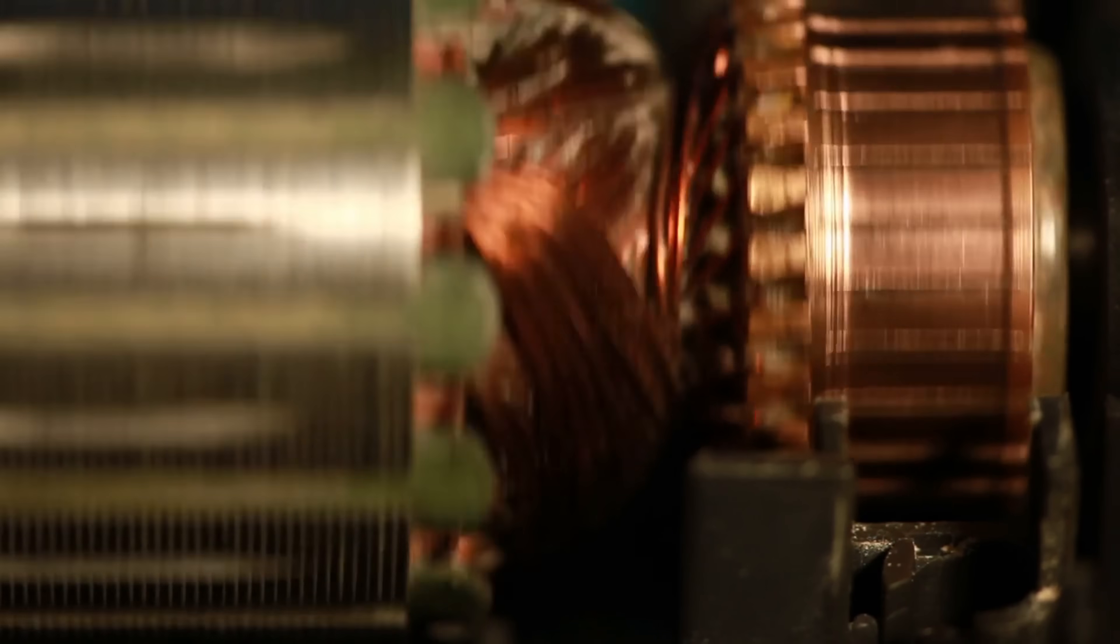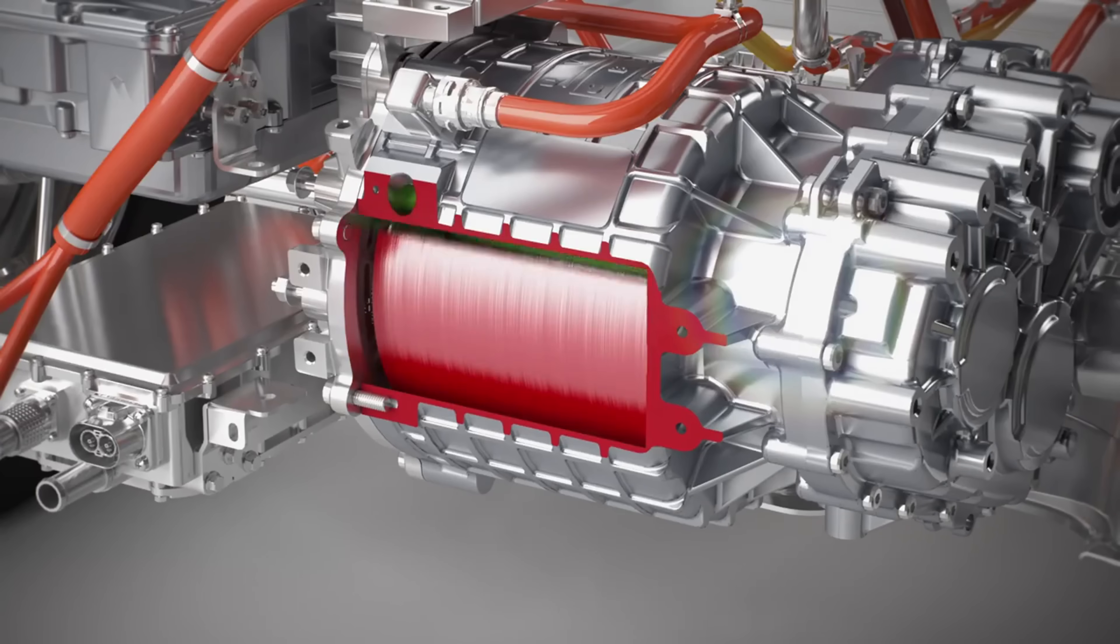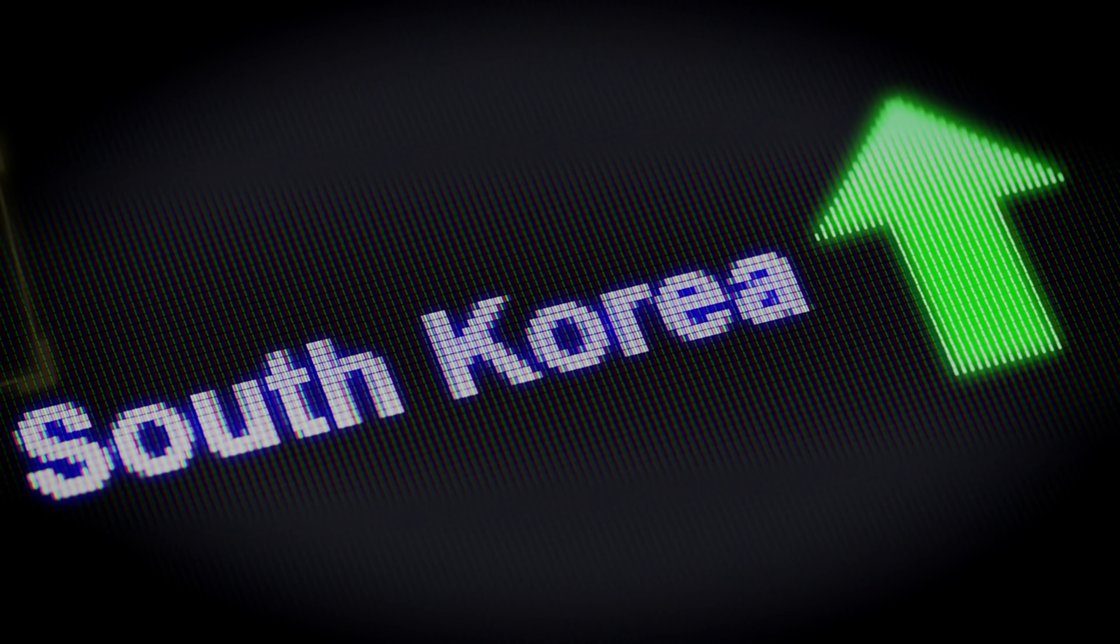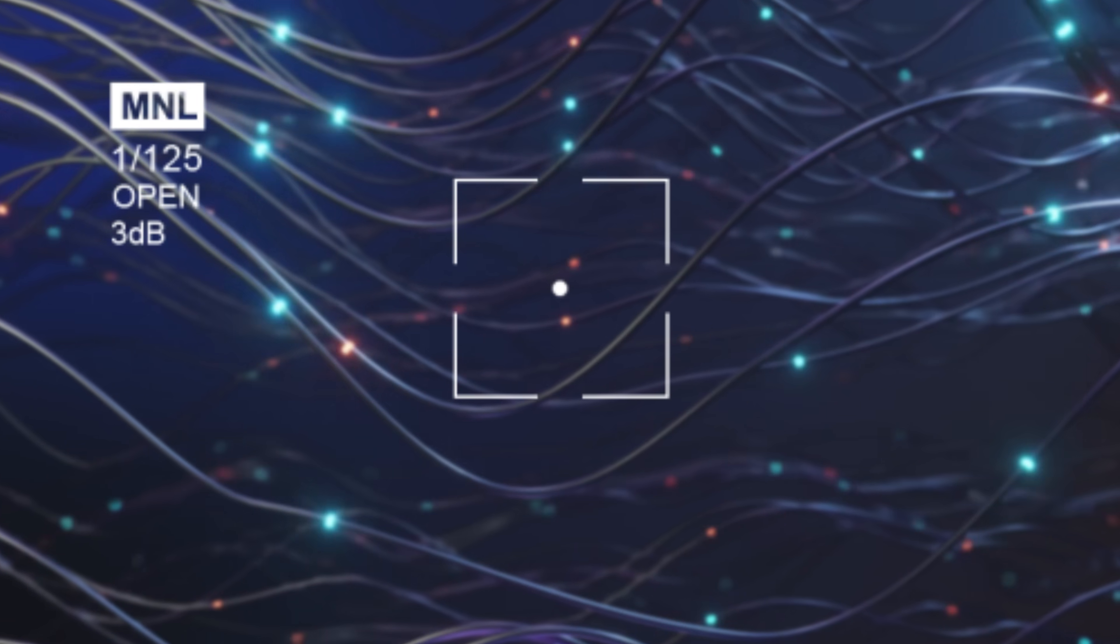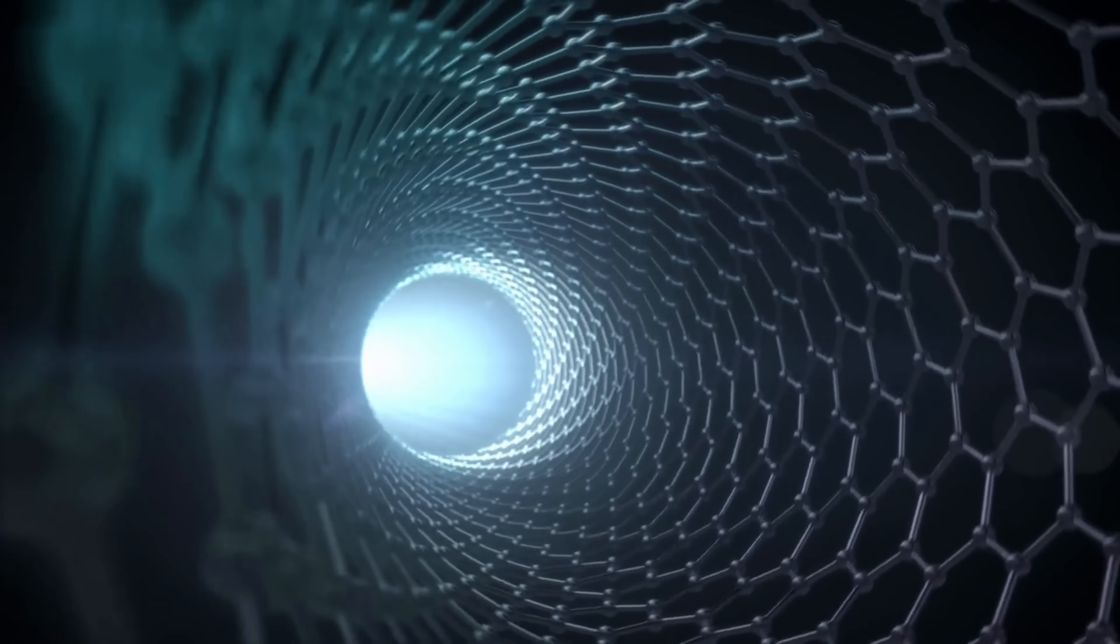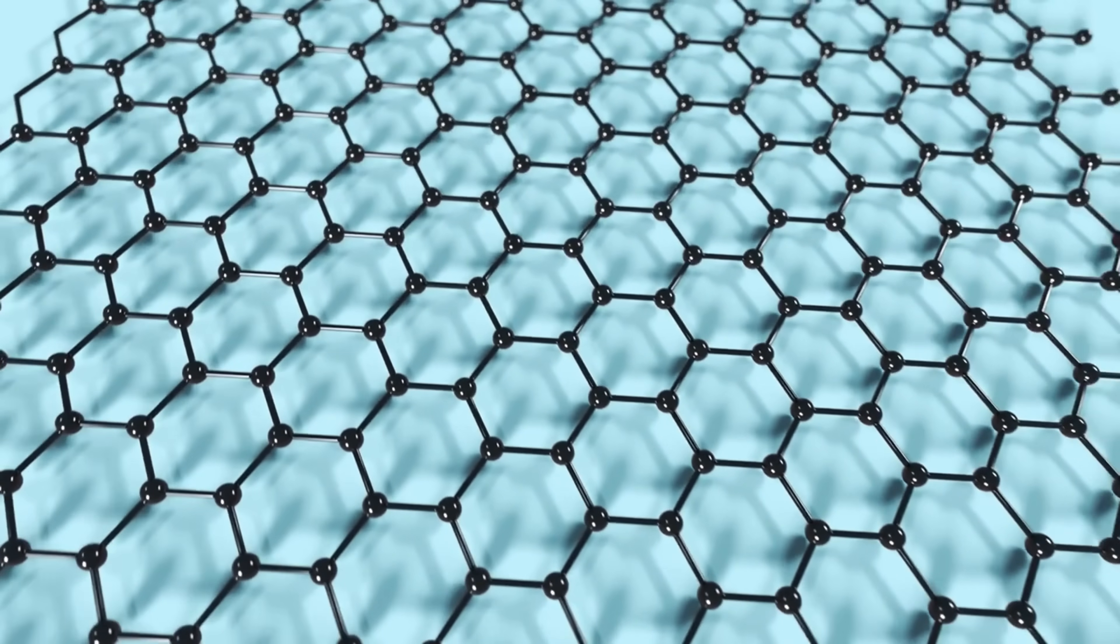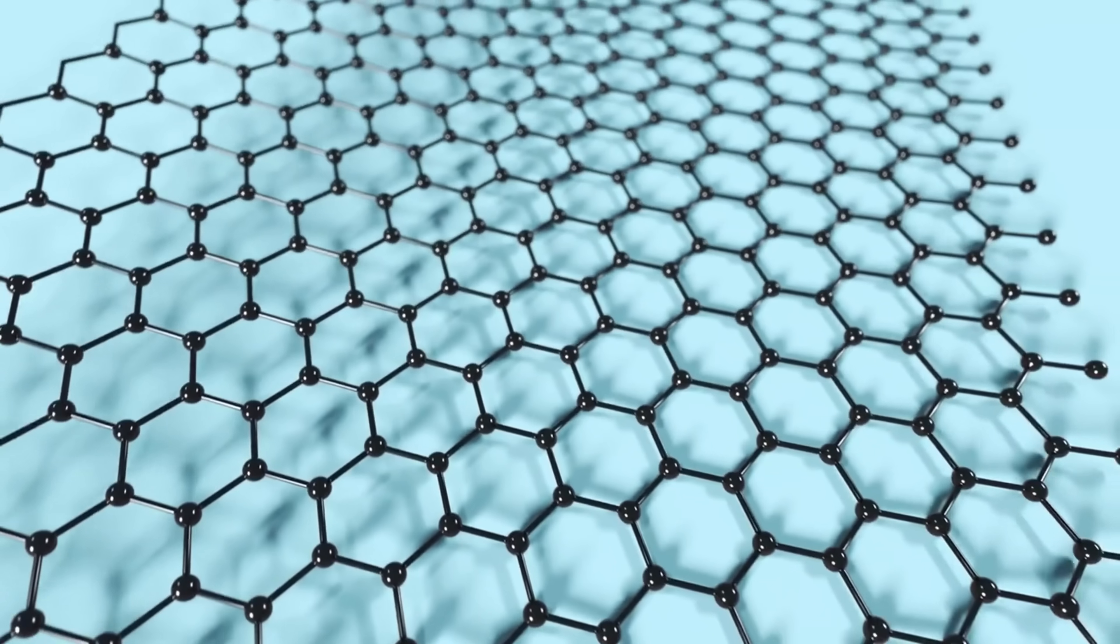For over a century, metal coils have been at the heart of electric motors. But now, a team of researchers in South Korea has built something radically different. They've created a new kind of wiring, made entirely from carbon, that could change how electric motors are built and what they can do.